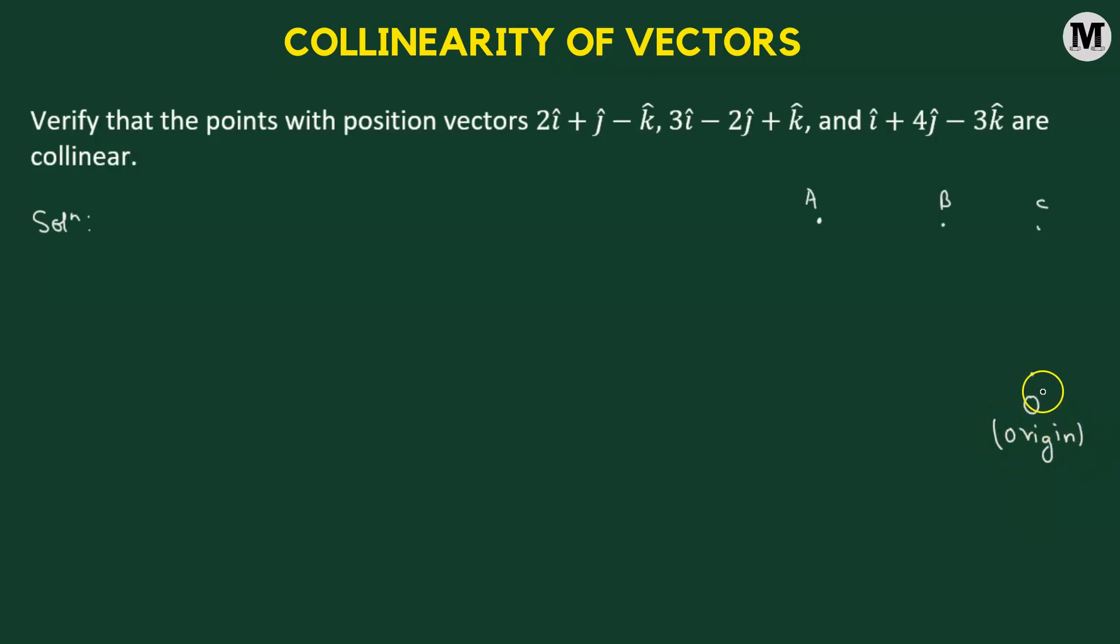Now, with respect to this origin, we can define the position vector of the three points A, B, and C. All you have to do is join point O and A, O and B, O and C, with the help of a directed line segment.